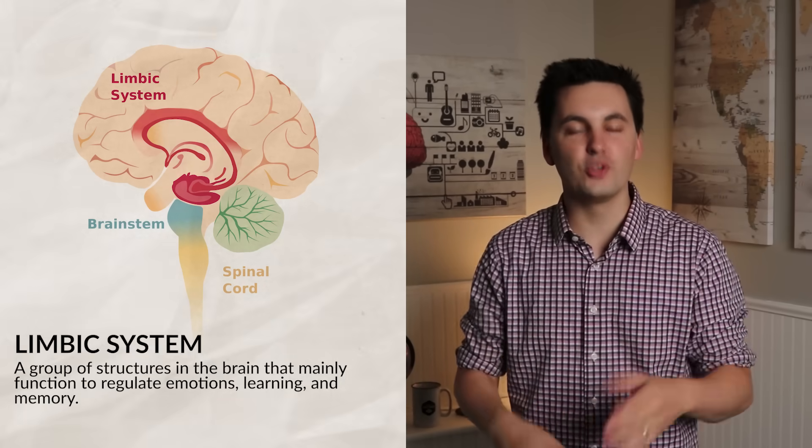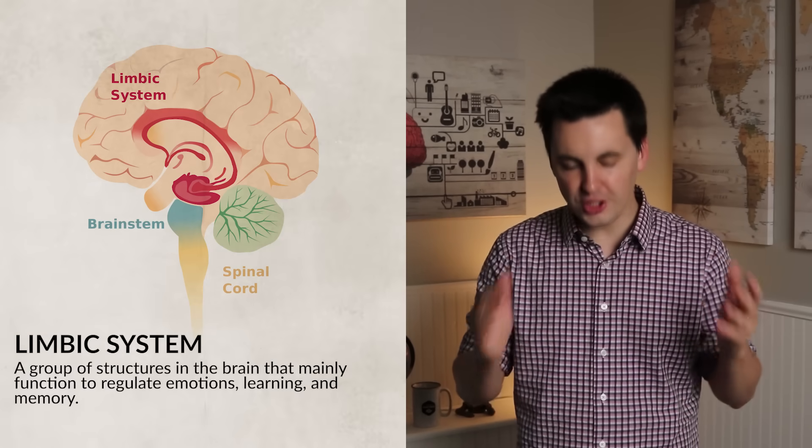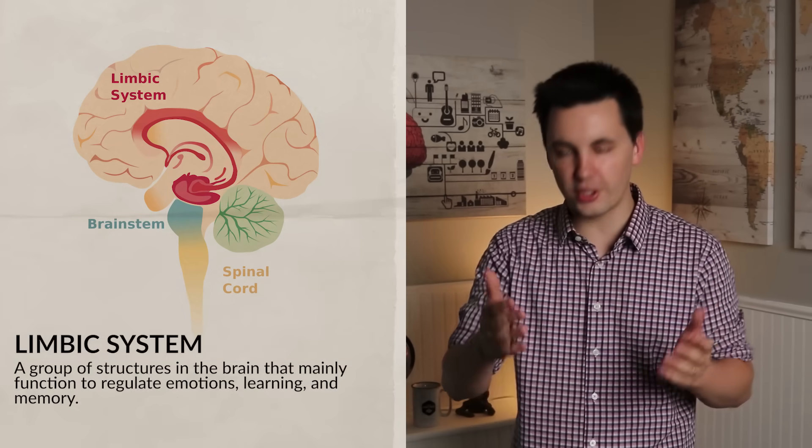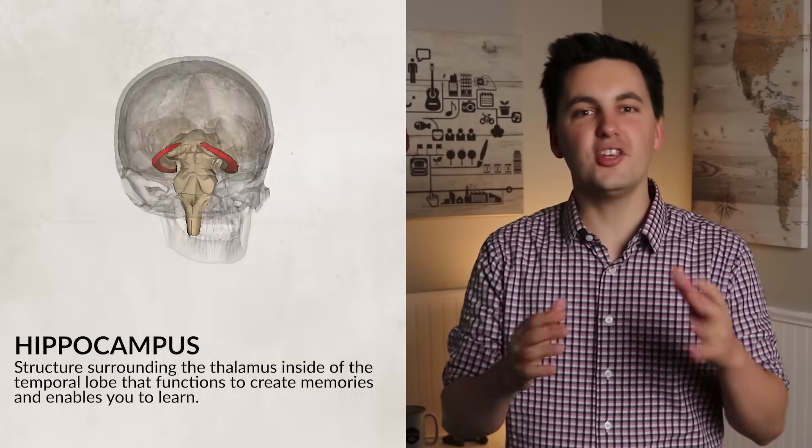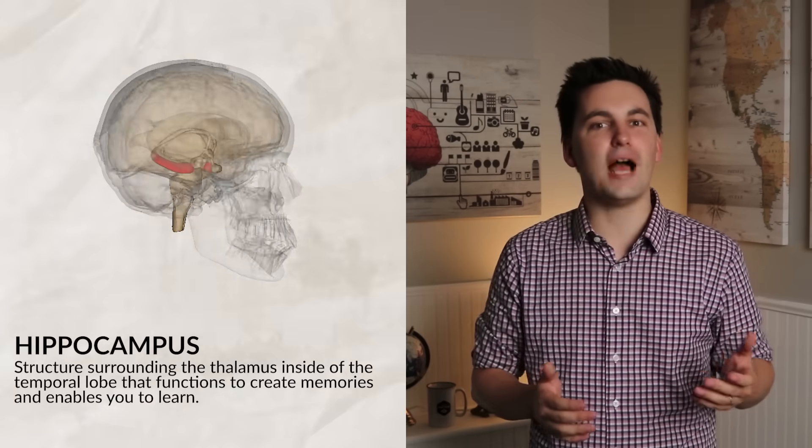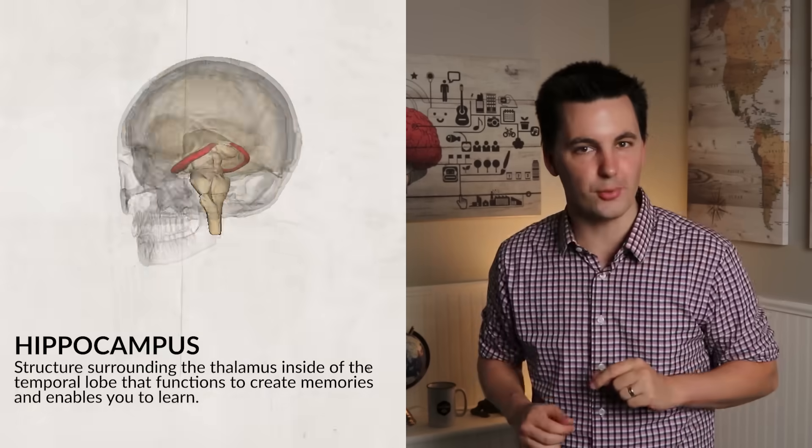Next up is the limbic system, which is a ring-shaped group of structures between the brainstem and the cerebral cortex. The function of the limbic system is emotions, learning, memory, and some basic drive. First up is the hippocampus. This structure is surrounding the thalamus, and it's inside the temporal lobe. This area allows you to create memories. This is how you learn new information and form memory. Remember, this is where memories are created, but not stored. That's going to be important to distinguish.